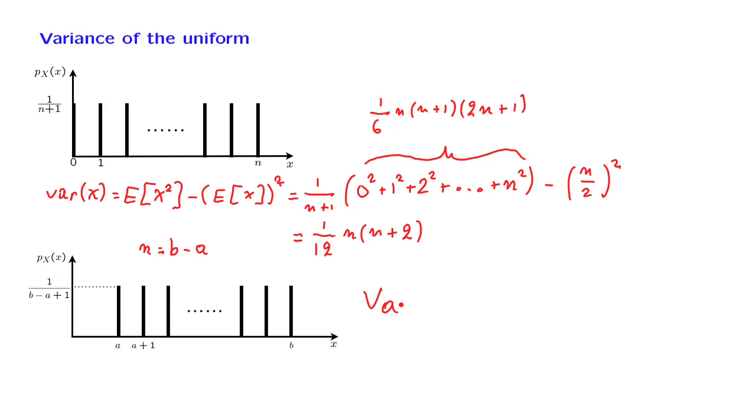So doing this substitution in the formula that we derived earlier, we obtain 1 over 12 times (b minus a) times (b minus a plus 2).